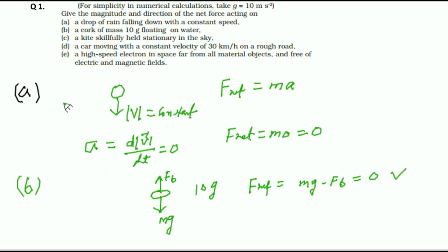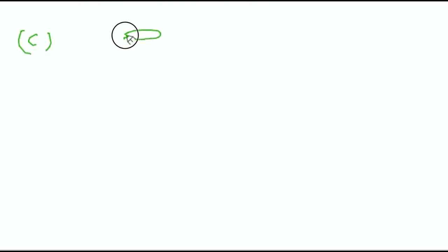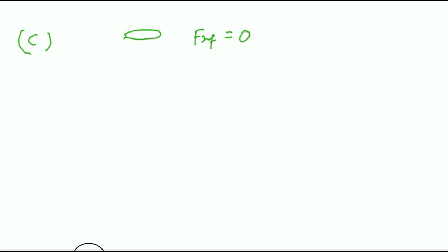Part C: a kite skillfully held stationary in the sky. A stationary object means net force is 0. So, the net force equals 0 in this third case also.